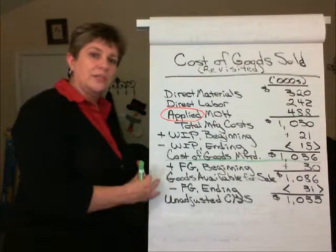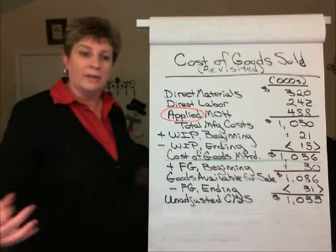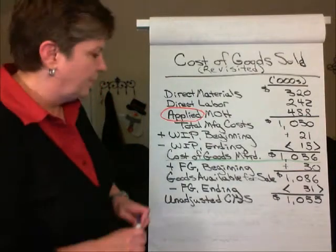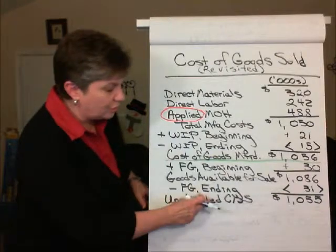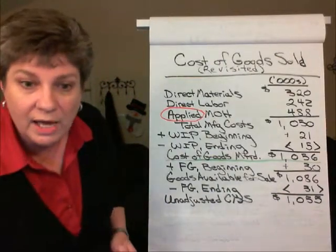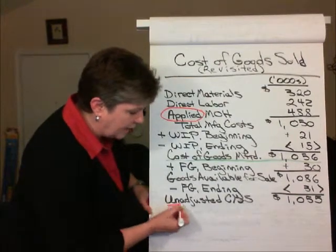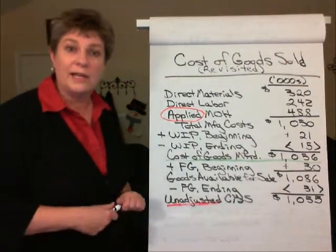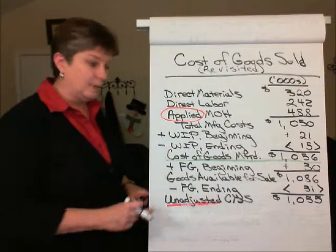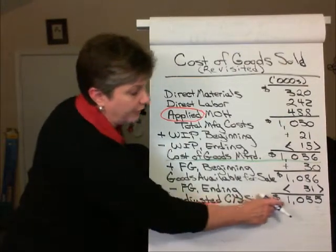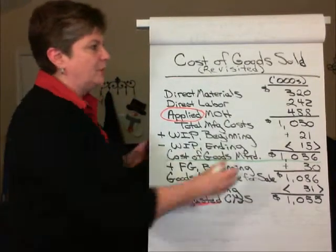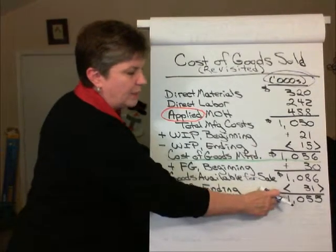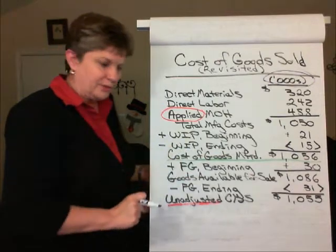Now, how do we adjust this number for the over or, in the case of our example, the underapplied manufacturing overhead? Notice that our Cost of Goods Sold shown at the bottom of the schedule is unadjusted Cost of Goods Sold. That tells us that this isn't the final amount of Cost of Goods Sold. The next thing we need to do is adjust this Cost of Goods Sold figure, which is $1,055,000. Note these amounts are in thousands of dollars, so this is $1,055,000.